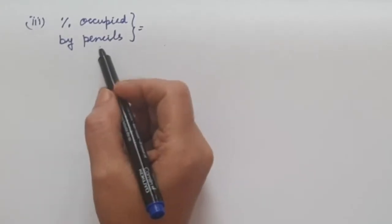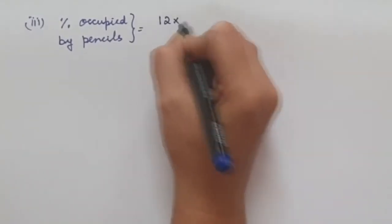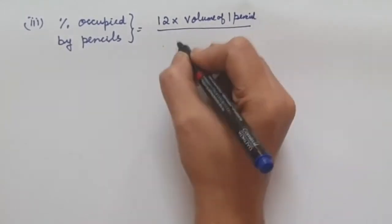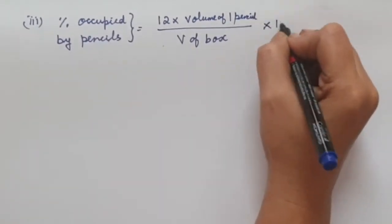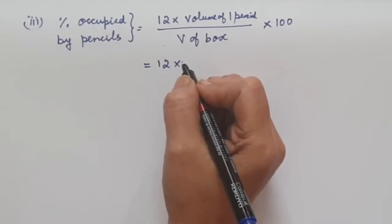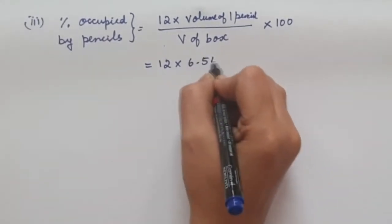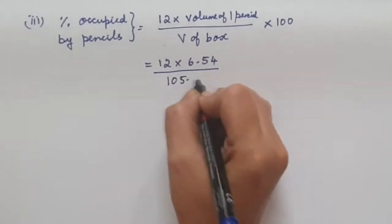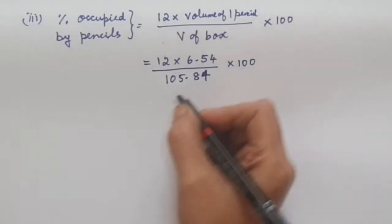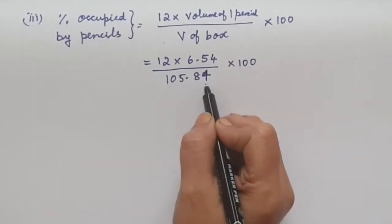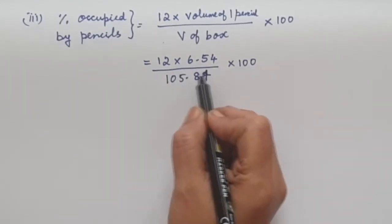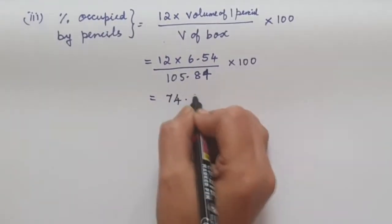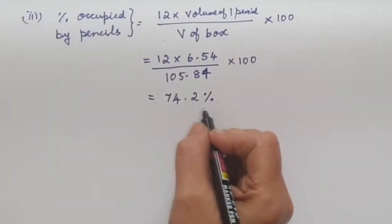The third part asks for the percentage of space occupied by the pencils. For this, we write: (12 × volume of 1 pencil) / volume of box × 100. We found the volume of one pencil in part A as 6.54 cm³, and the volume of the box is 105.84 cm³. Note that we use the unrounded value 105.84, not the 3-significant-figure value of 106. When we simplify, we get 74.2%. This is the percentage of the box the pencils occupy.